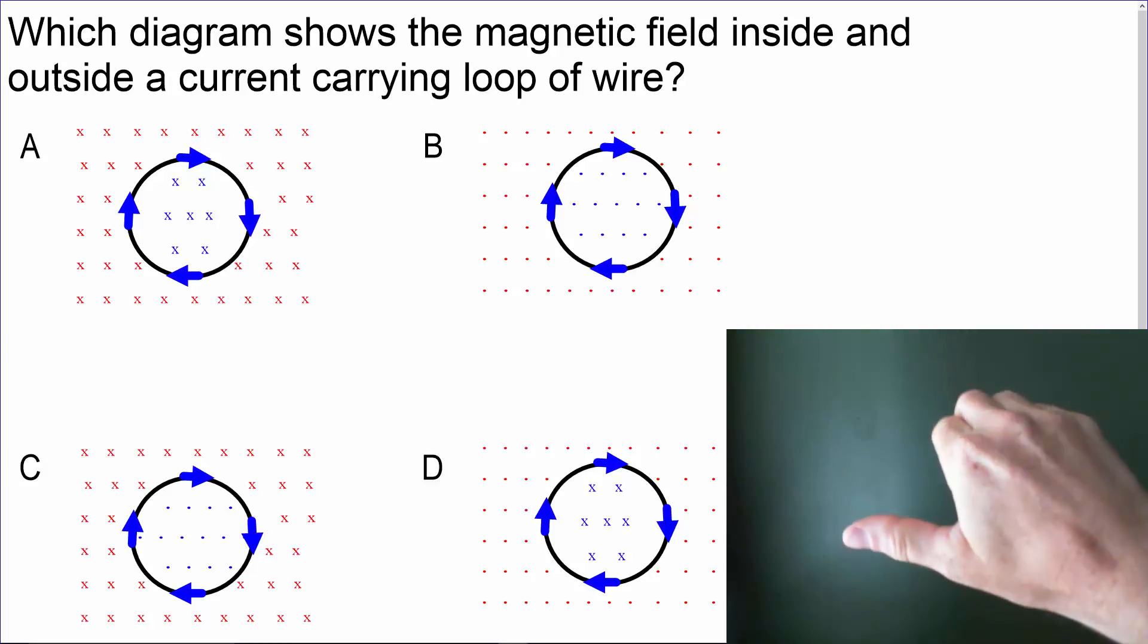We can see that above the current-carrying wire, which is up here, our fingers are pointing into the page, which is always represented by an X.